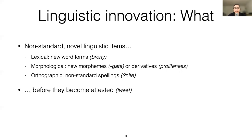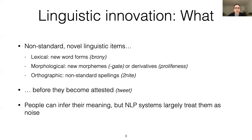I'm interested in how these items can be understood early in their life cycle — before they enter the dictionaries, before they become established in the vocabulary of a community of speakers, like the word 'tweet' by now has. People can often figure out the meaning of such non-standard items from their form and from context, but NLP systems still largely treat them as noise. Subword modeling can help with getting meaningful representations of these items, but only to a limited extent. This is not a solved problem in NLP.